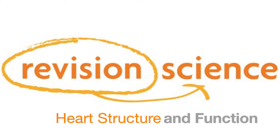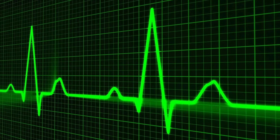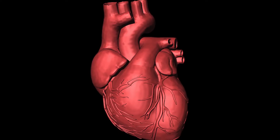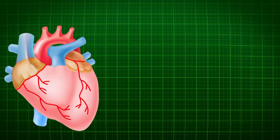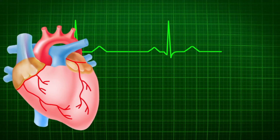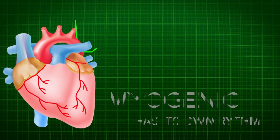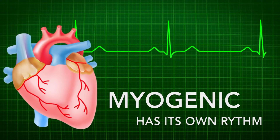Welcome to another video from RevisionScience.com: heart structure and function. The heart consists of a range of tissues; the most important one is the cardiac muscle. The cells have the ability to contract and relax through the complete life of the person without ever becoming fatigued. Each cardiac muscle cell is myogenic, meaning it has its own inherent rhythm.